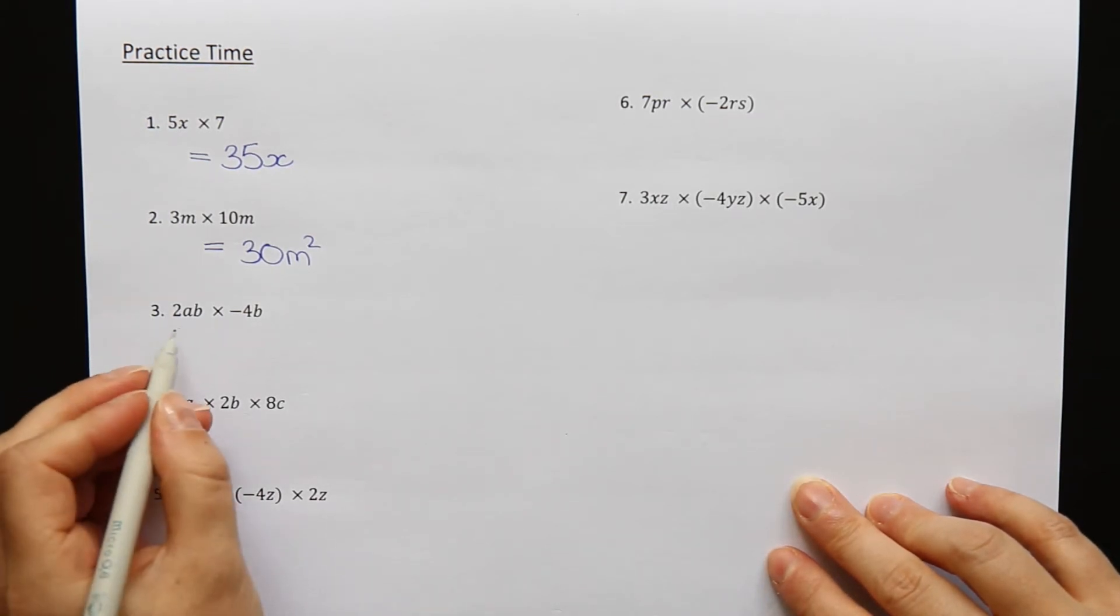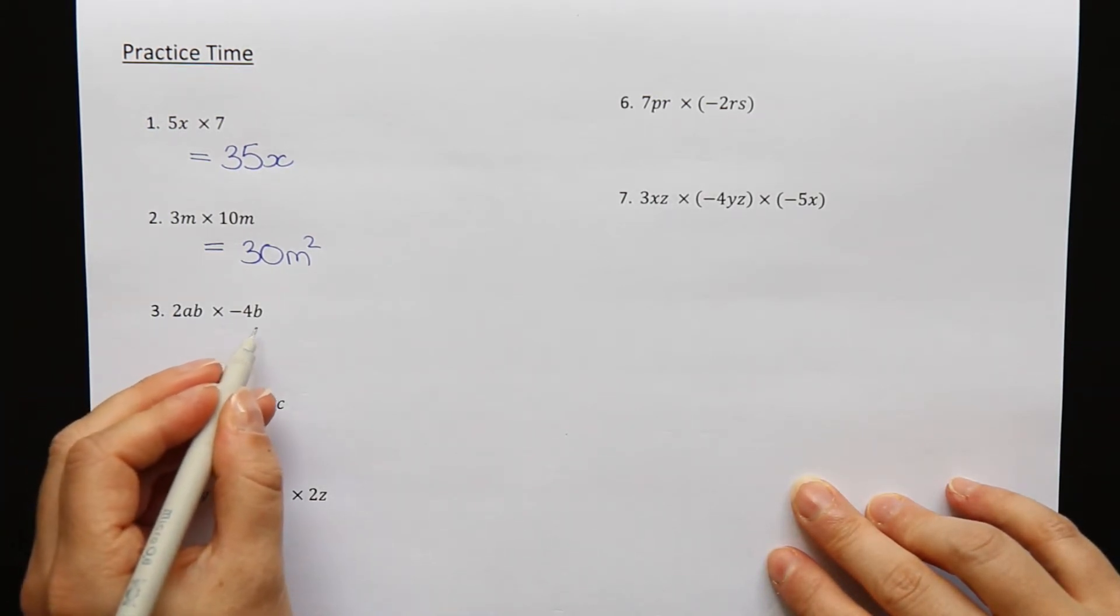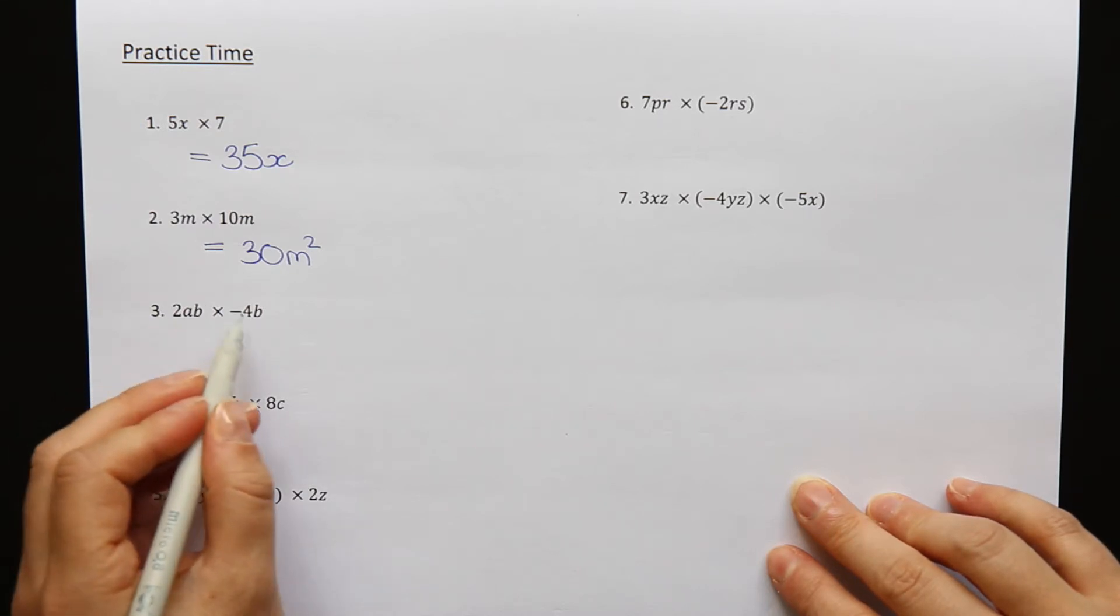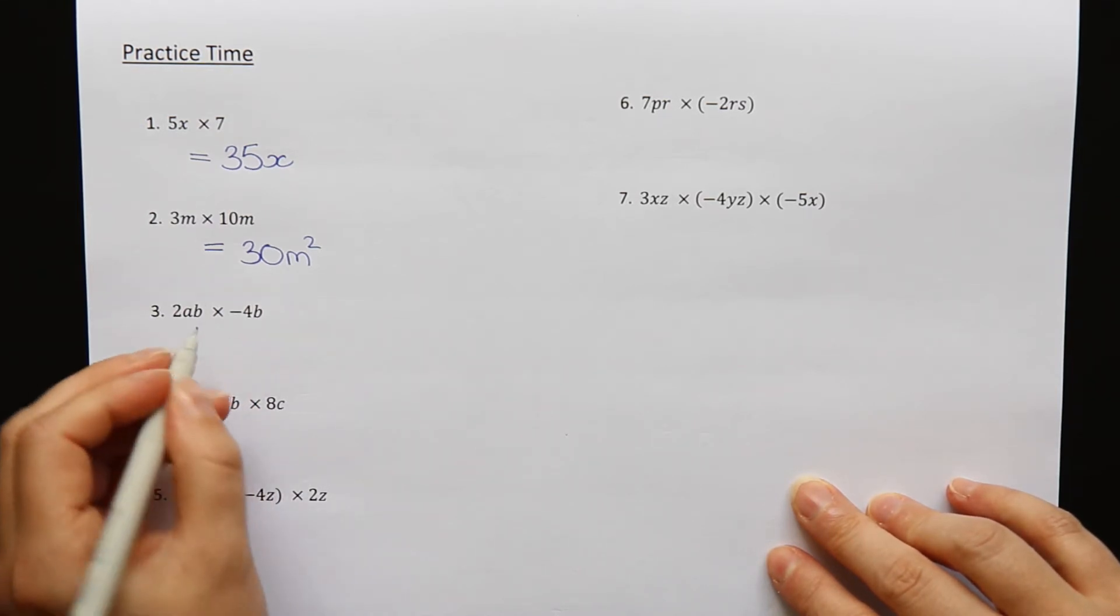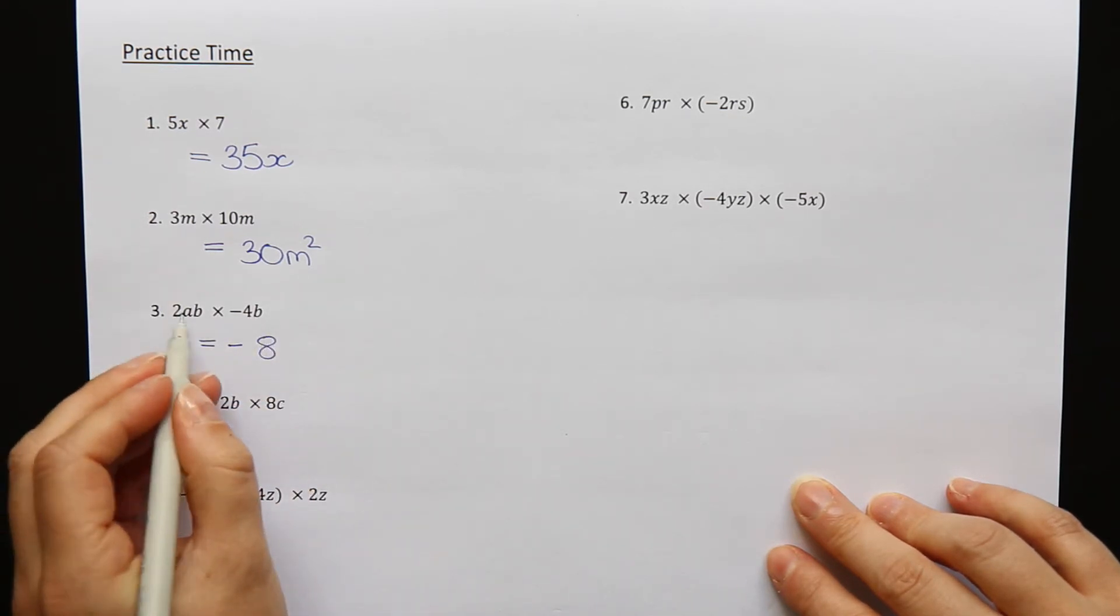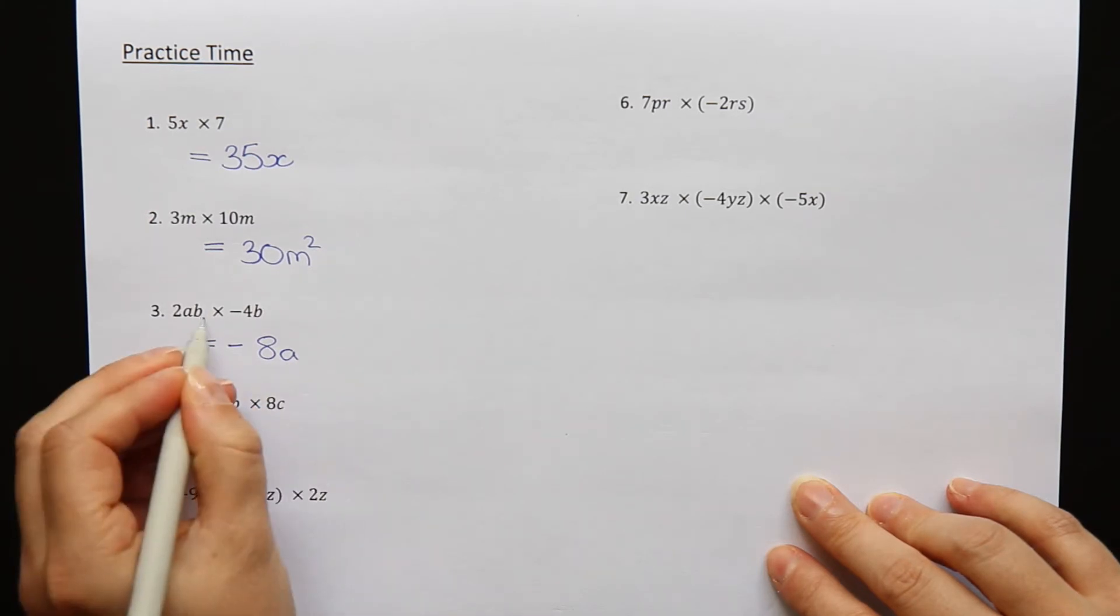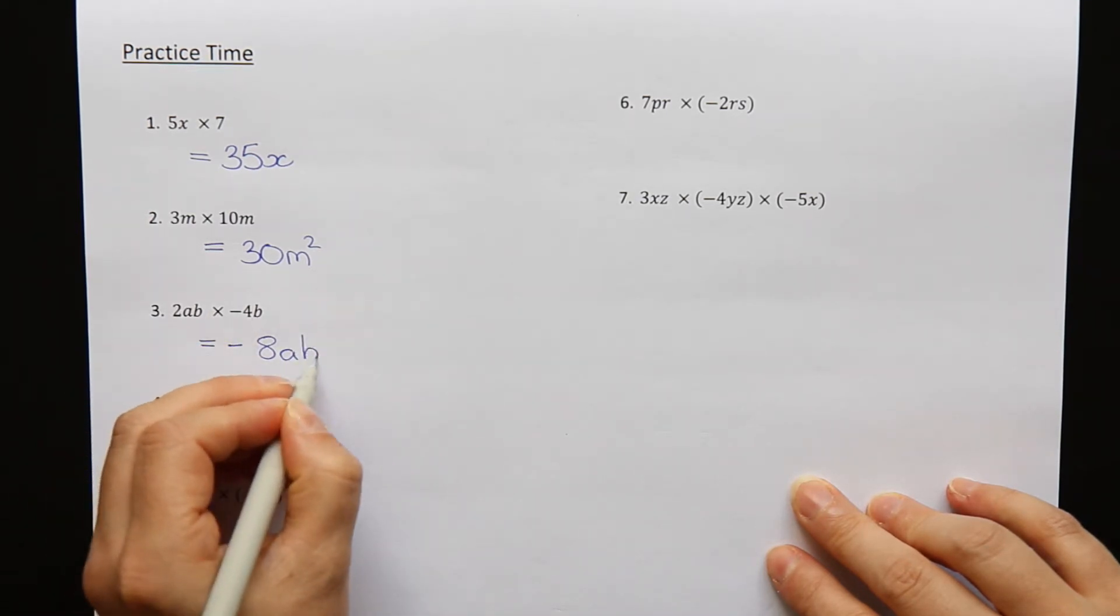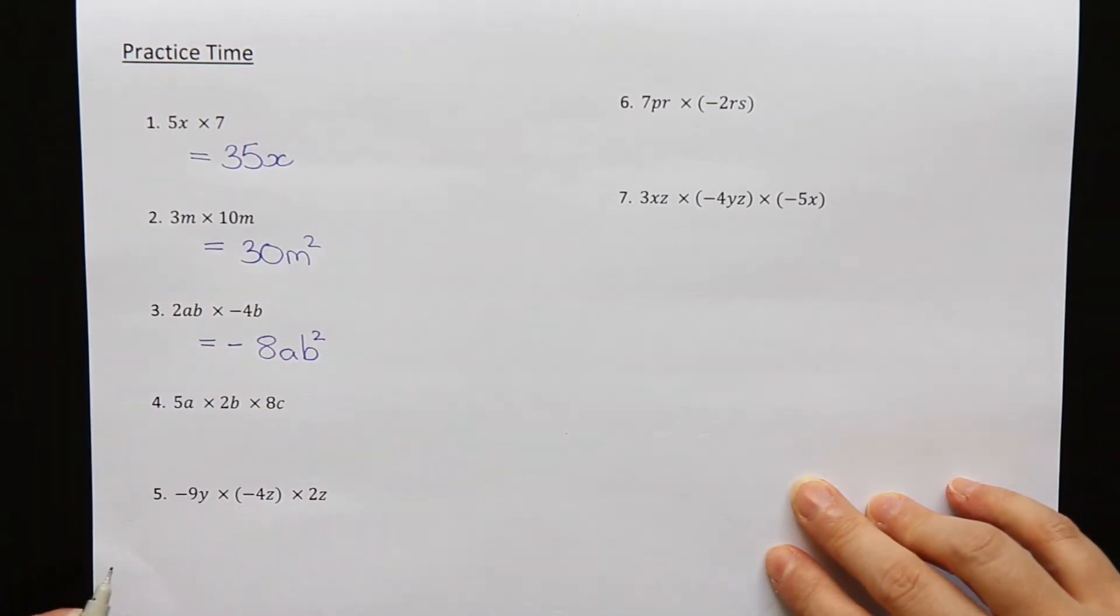Question 3: 2ab times minus 4b. 2 times minus 4—a positive and a negative will give me a negative. 2 times 4 is 8. We have 1a and b times b, which is b squared, so minus 8ab squared.